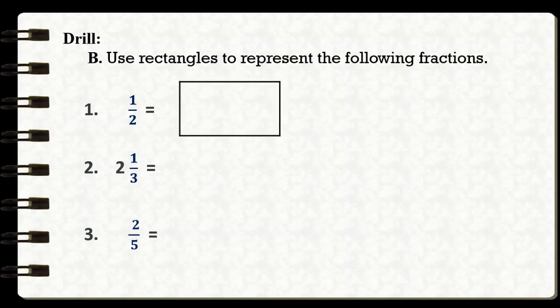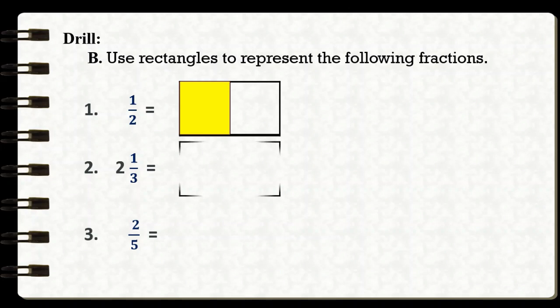For number one, to represent one-half we need to draw one whole rectangle, then divide it into two equal parts, and lastly shade one part of the whole. So that's equal to one-half.